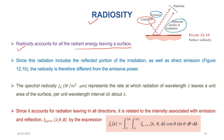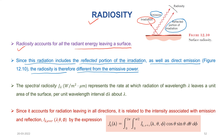Radiosity comprises both emission as well as the reflected portion of the irradiation. Since this radiation includes the reflected portion of the irradiation as well as the direct emission, the radiosity is therefore different from the emissive power. The energy leaving the surface comprises two things: one is the emission and the other is the reflected portion of the irradiation.